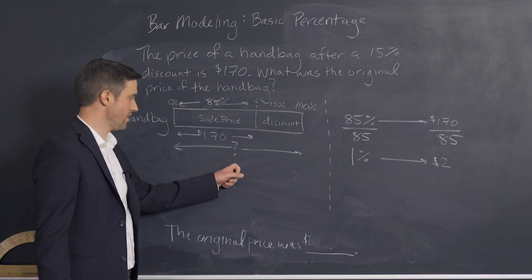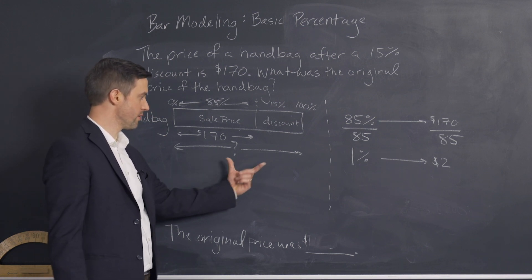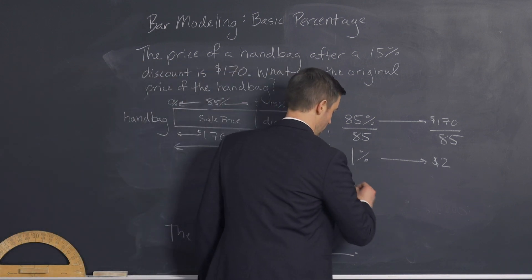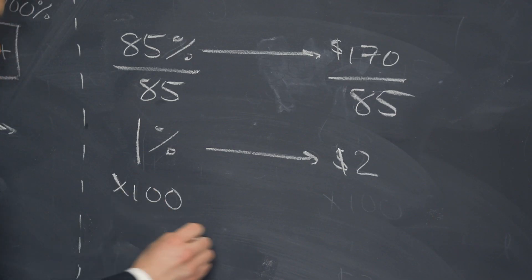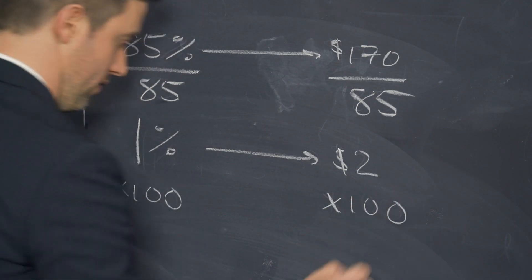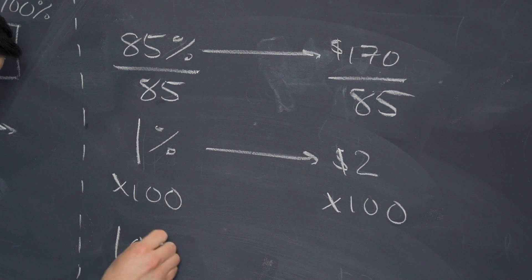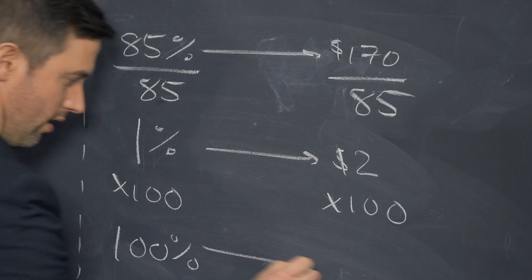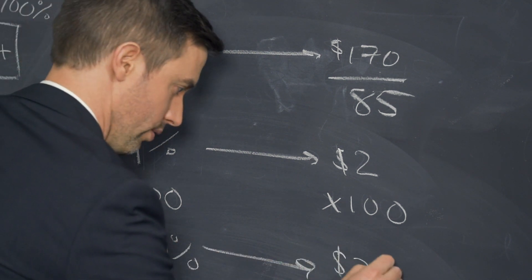And I haven't yet gotten here. I want to get the full 100%. I want to get the quantity for that. So I multiply by 100 on both sides. So that 100% is equal to $200.